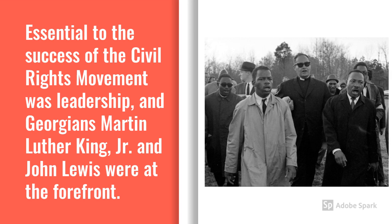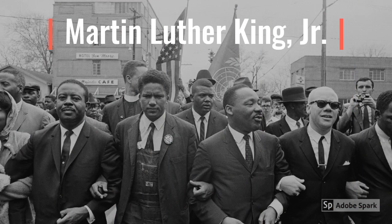As the son and grandson of ministers, King eventually chose the same profession. He earned his Ph.D. in Divinity from Boston University, where he met his wife, Coretta Scott. In 1954, King moved to Montgomery, Alabama to lead a church. A year later, he found himself serving as the spokesperson for the successful Montgomery Bus Boycott. Eventually, the Supreme Court made segregation on Montgomery buses unconstitutional.